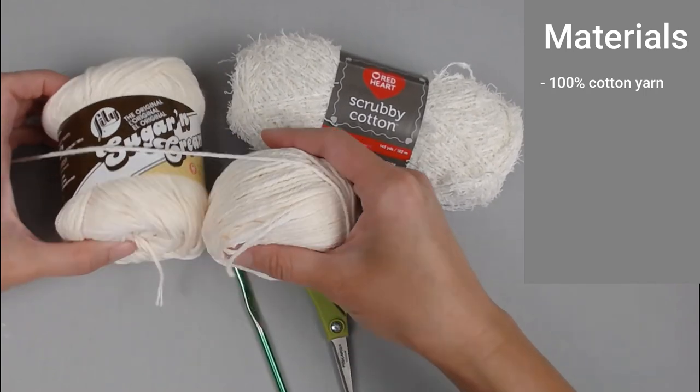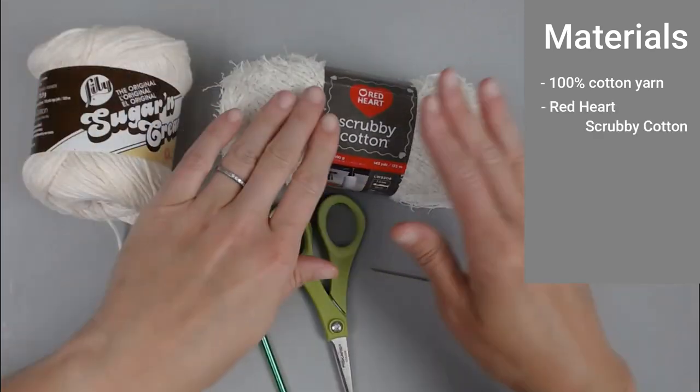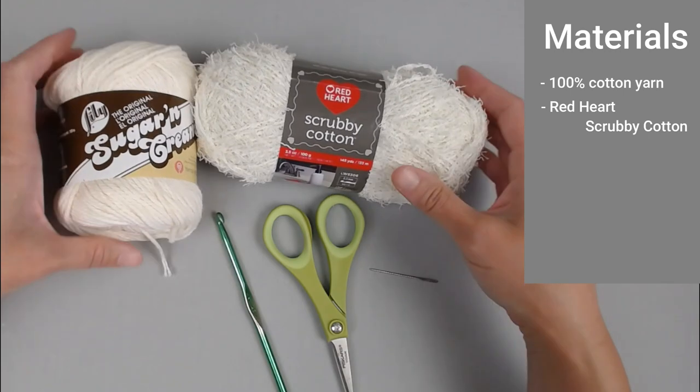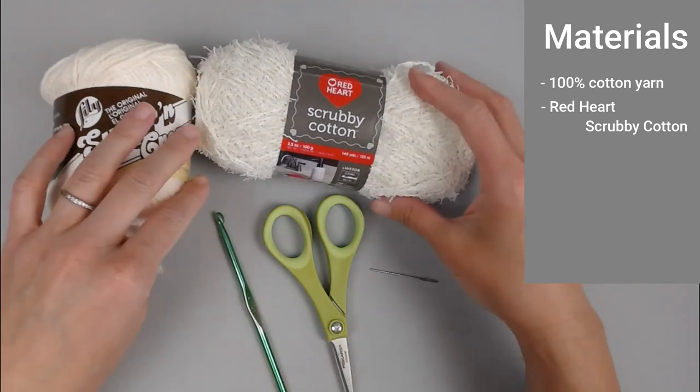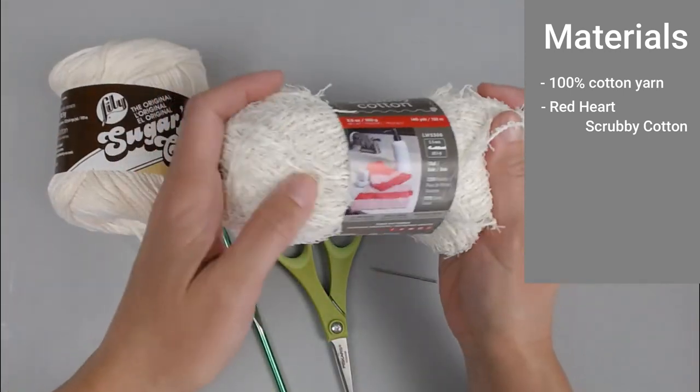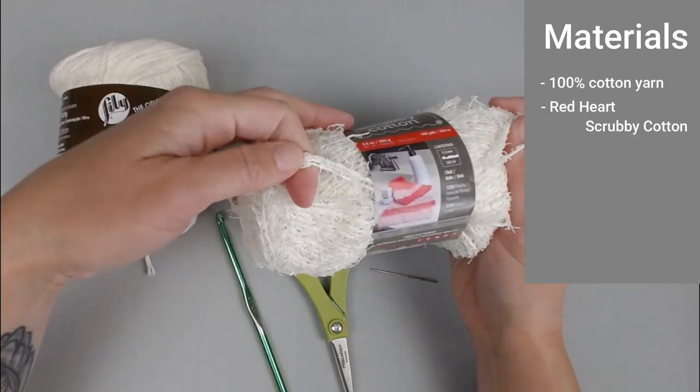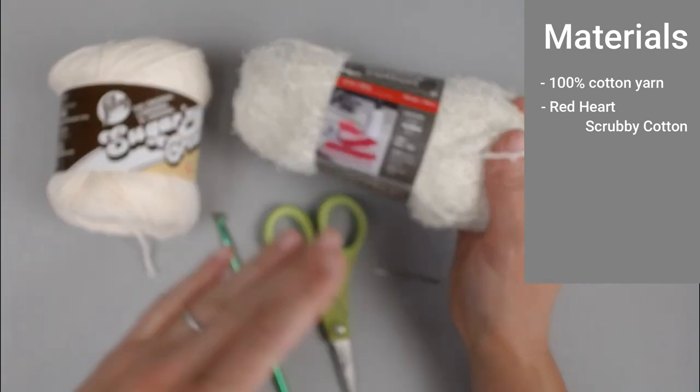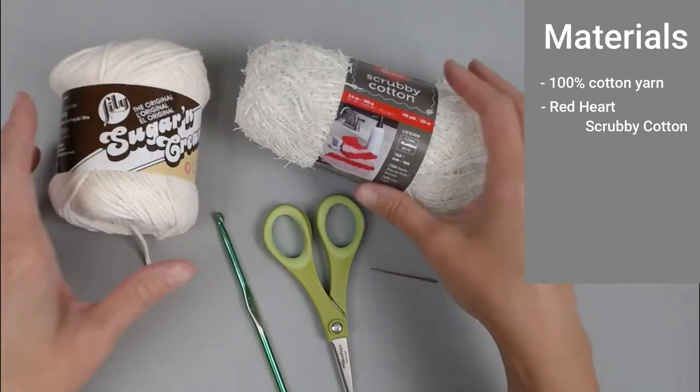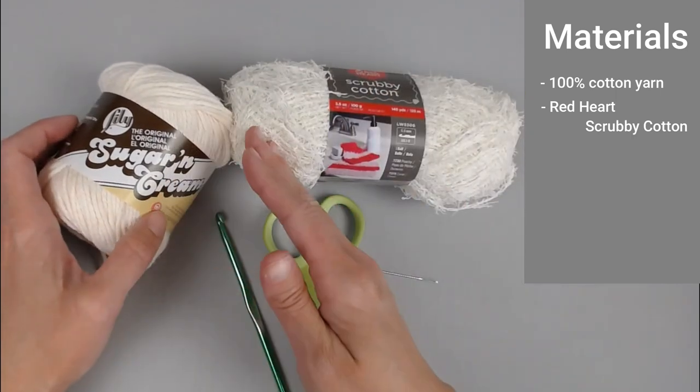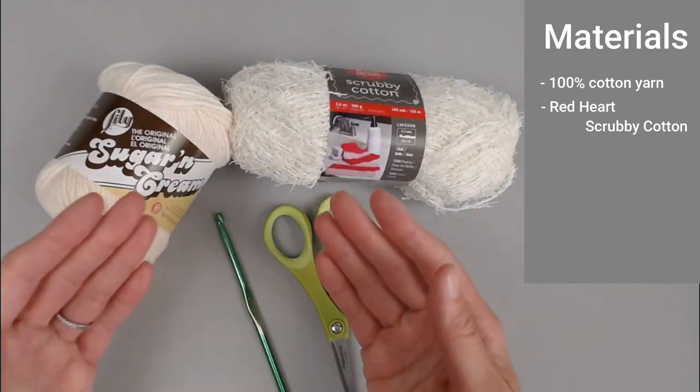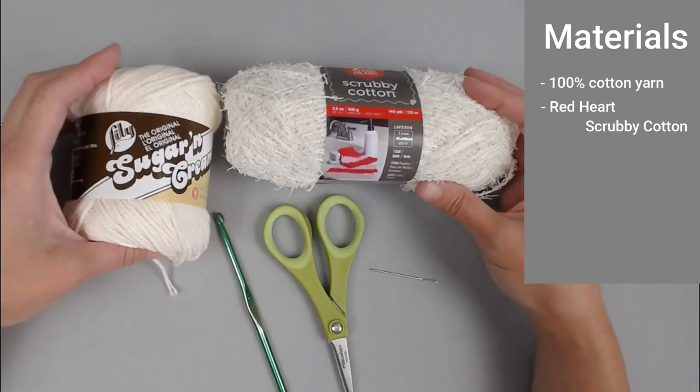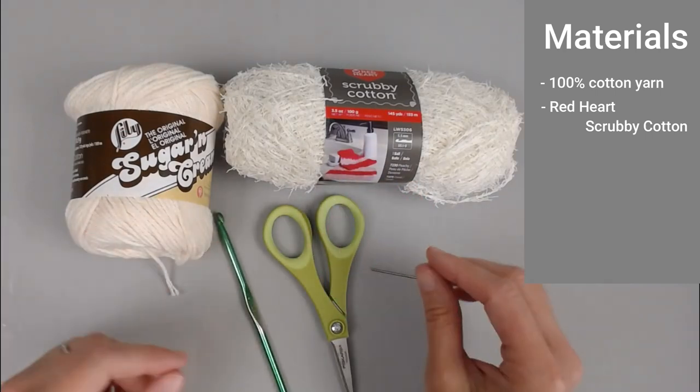I also used the Red Heart scrubby cotton yarn. I used these together and that really helped with the exfoliating factor. If you don't have Red Heart, just try to find any really scratchy scrubby type of yarn that is used for the exfoliating factor of the spa back scrub. You can use the same color if you want or two completely different colors. Make it your own.